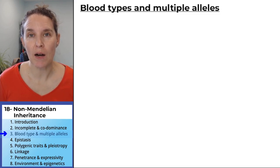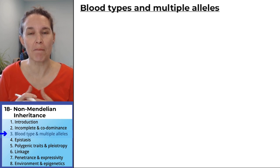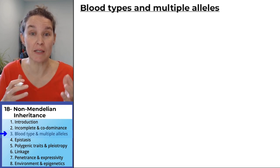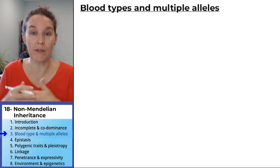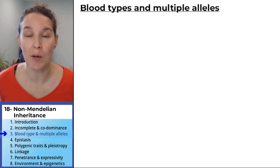Now, blood types are a phenotype that is caused by multiple alleles. Multiple alleles contribute to the phenotypes that you see when we're talking about blood typing.